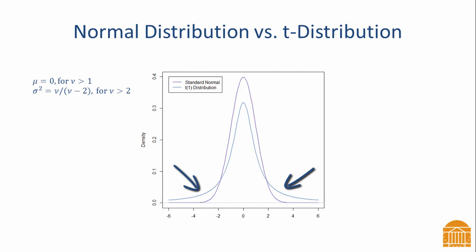Heavier tails means there is more probability in the extreme regions of the distribution. These heavier tails are due to the increased variability associated with estimating the sample mean and the sample standard deviation when computing the t-test. Differences in the two distributions are more pronounced for small degrees of freedom. They are less apparent when the degrees of freedom is large.